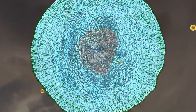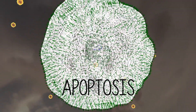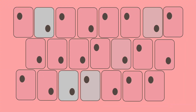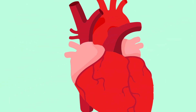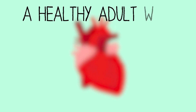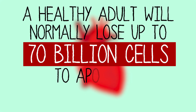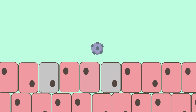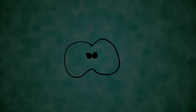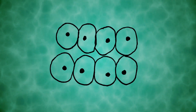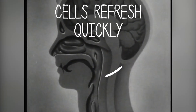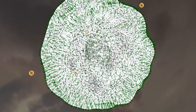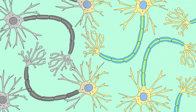One of the ways it does this is by triggering a cell's inbuilt self-destruct programme called apoptosis. Apoptosis is a totally normal process in the life and death of a cell, and it's needed to keep our organs and tissues working properly. A healthy adult will normally lose up to 70 billion cells to apoptosis every single day. But the problem comes when a virus triggers this programmed cell death at the wrong time in the wrong type of cell. The poliovirus targets mature nerve cells which can't be replaced — the cells are lost forever, leading to paralysis.